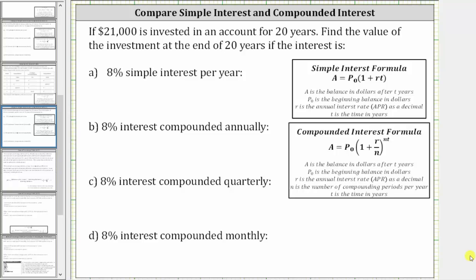If $21,000 is invested in an account for 20 years, find the value of the investment at the end of 20 years if the interest is: A, 8% simple interest per year; B, 8% interest compounded annually; C, 8% interest compounded quarterly; and D, 8% interest compounded monthly.